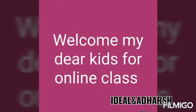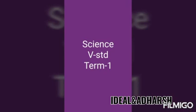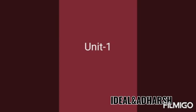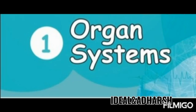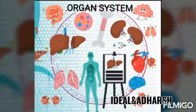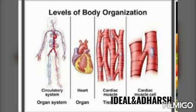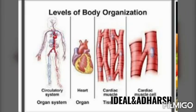Welcome, dear kids, to online class. Subject: Science, Standard 5th, Term 1, Unit 1. Our topic is organ systems. Look at this picture — there are many organs: bones, lungs, heart, brain, kidney, liver, and pancreas. A cell is the building block of every living thing. A group of similar cells working together make a tissue. A group of different tissues working together make an organ, for example, the heart. A group of different organs working together make an organ system.